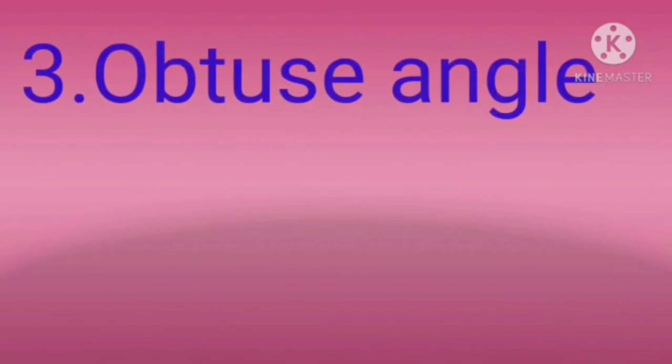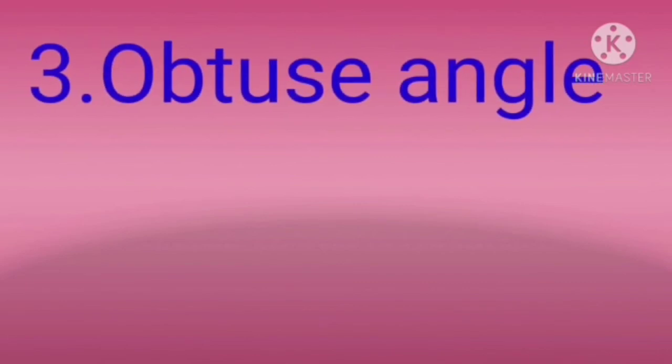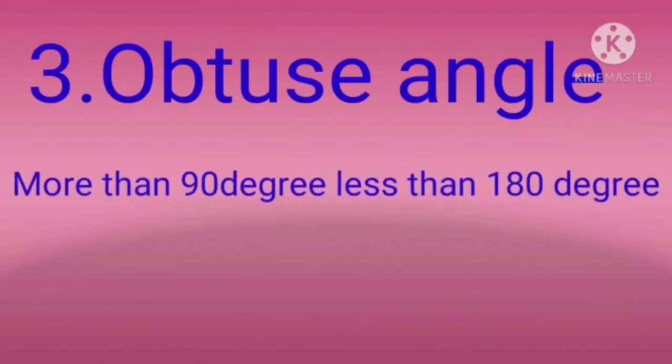And the next third one angle, obtuse angle. Children, what is obtuse angle? The angle measured more than 90 degree and less than 180 degree is called obtuse angles. So 90 degree gintha hadhu inka less than 180 degree ithanaha angles na na wo obtuse angles antha karitthi vi.